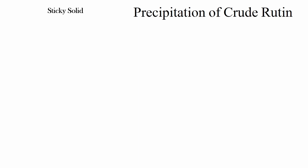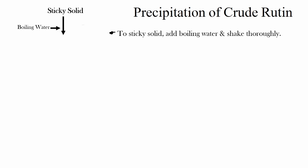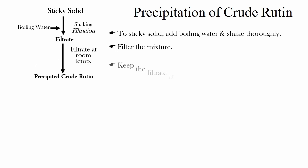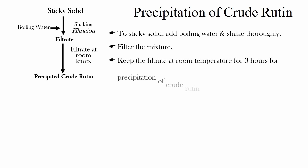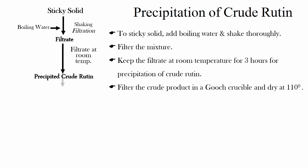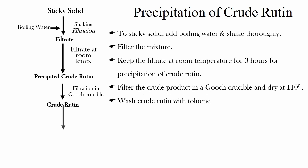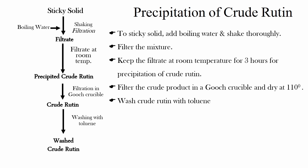Precipitation of crude Rutin: To the sticky solid mass, add boiling water and shake thoroughly. Filter the reaction mixture. Keep the filtrate at room temperature for three hours for precipitation of crude Rutin. Filter the crude product in a coarse crucible and dry it at 110 degrees centigrade. Wash the crude Rutin with toluene to obtain washed crude Rutin.